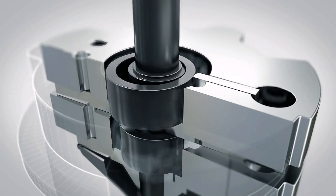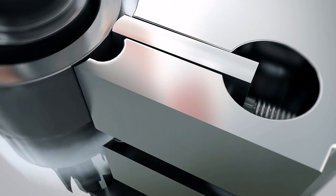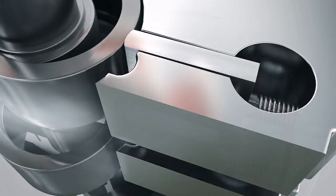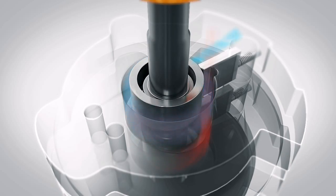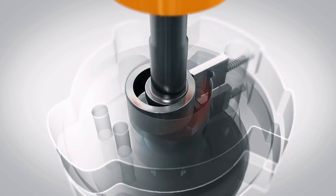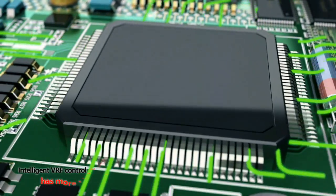Toshiba's latest generation all-inverter twin rotary compressor design is found within SMMSE and SHRME systems. The SMMSE and SHRME are capable of controlling up to 64 individual units, which corresponds to over 300 independent sensors.